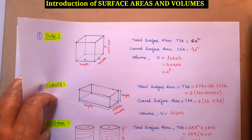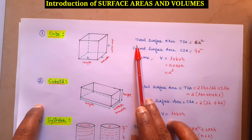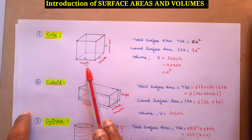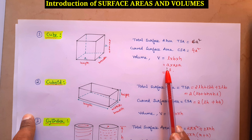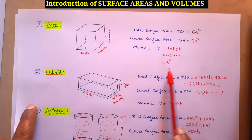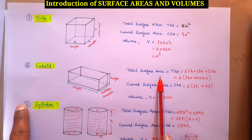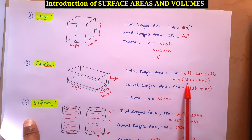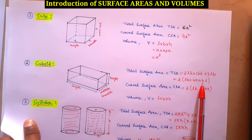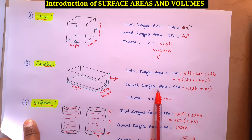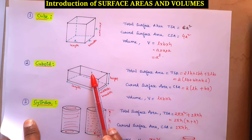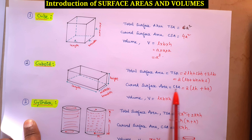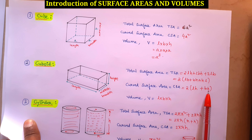Pause the video and note down all these formulas. Cube: TSA = 6A², where length = breadth = height = A, so volume = A³. Cuboid: TSA = 2(LB + BH + HL). Curved surface area = 2(LH + BH). Volume = L × B × H.